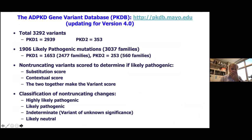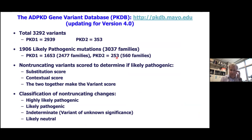Here's a summary of the database as we're currently updating it: over 3,000 variants total — approximately 2,900 to PKD1 and 353 to PKD2. Likely pathogenic changes number over 1,900 overall — about 1,650 to PKD1 and 250 to PKD2. In the database, we try to score each variant to determine whether it's pathogenic and place it in the appropriate pathogenic group.